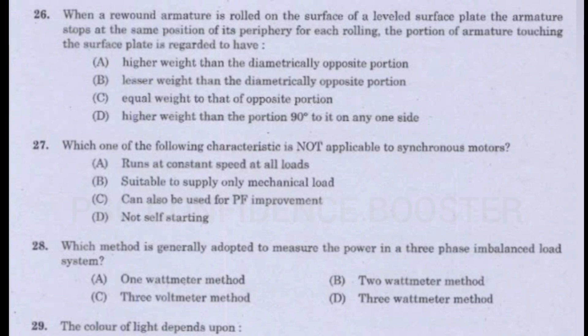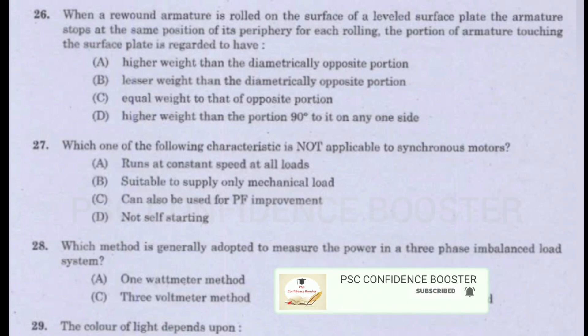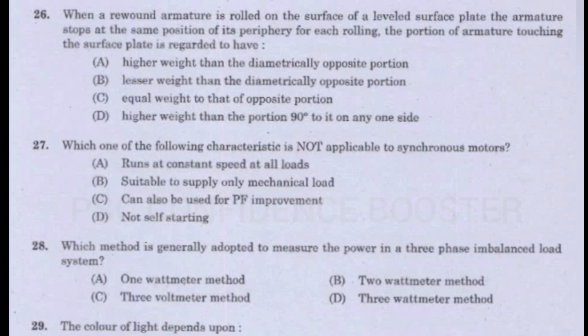Question number 26. When a rewound armature is rolled on the surface of a leveled surface plate, the armature stops at the same position of its periphery for each rolling. The portion of armature touching the surface plate is regarded to have: Option A - Higher weight than the diametrically opposite portion. Option B - Lesser weight than the diametrically opposite portion. Option C - Equal weight to that of opposite portion. Option D - Higher weight than the portion 90 degrees to each on any one side. Answer is Option A: Higher weight than the diametrically opposite portion.